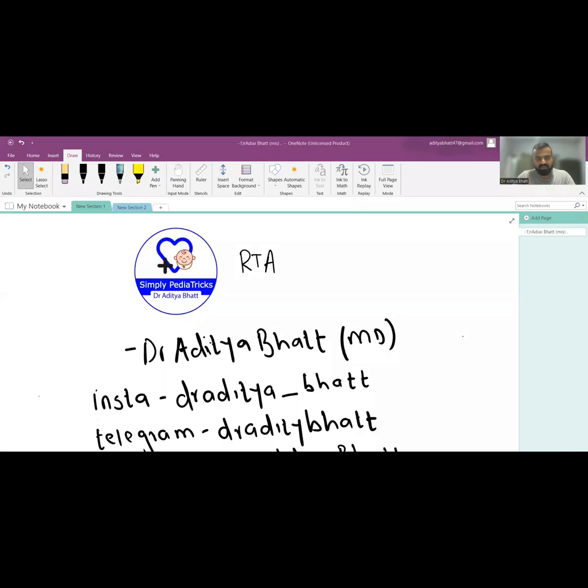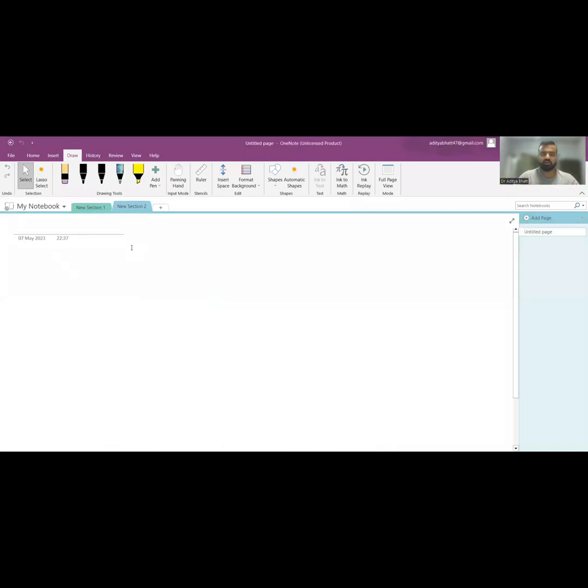Renal tubular acidosis is an abnormality in the kidney which leads to inadequate acidification. We'll try to diagnose the type of RTA. Proximal RTA is type 2, distal RTA or classic RTA is type 1, and then type 4 RTA. Type 3 RTA is associated with osteopetrosis. There are primarily three types of RTA that we need to remember.